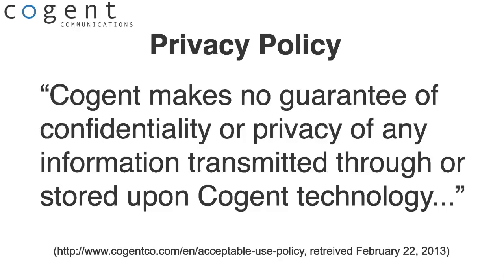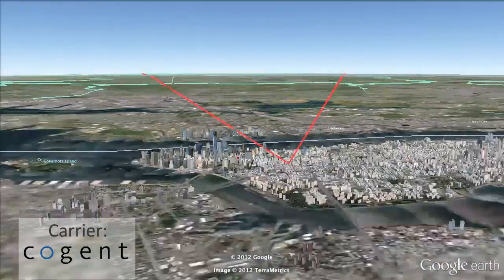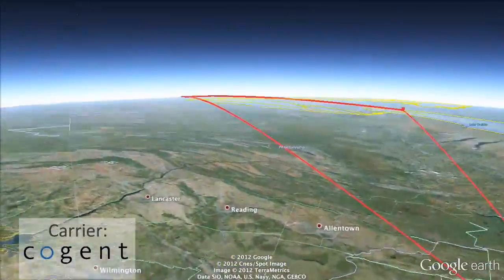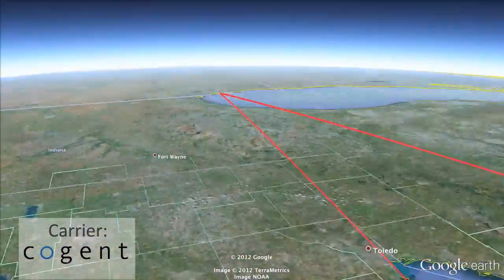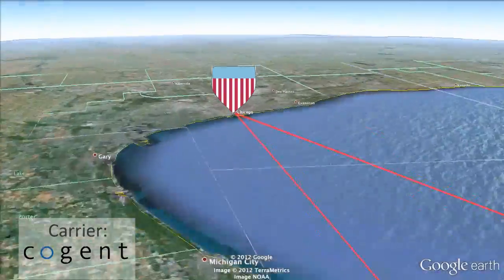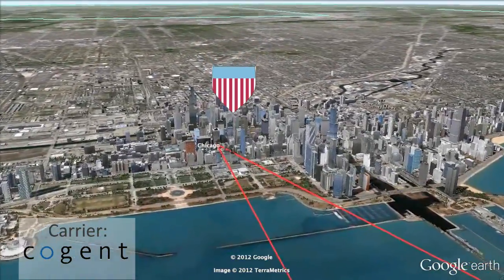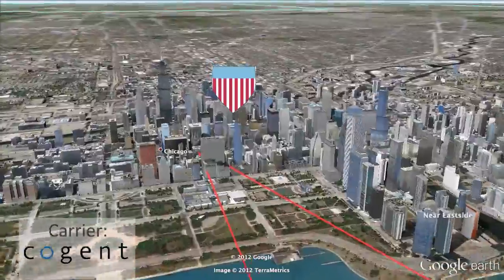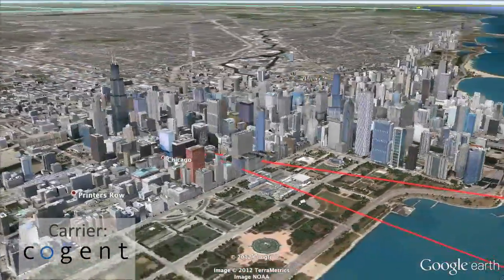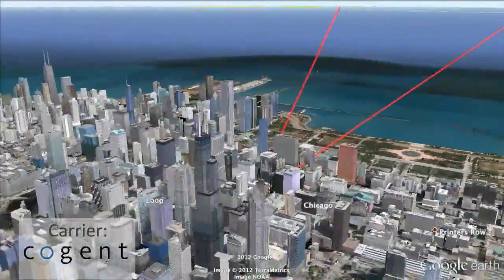Cogent's privacy policy states: "Cogent makes no guarantee of confidentiality or privacy of any information transferred through or stored upon Cogent technology." So it's unlikely that Cogent would act to protect personal information from the NSA. From New York, the student's data is forwarded to Chicago, another city where the NSA is strongly suspected of setting up a warrantless wiretapping operation.